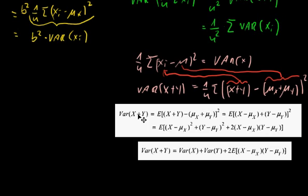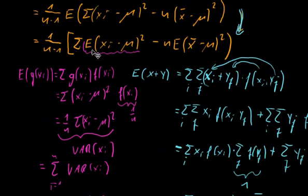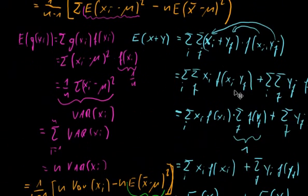The variance of X plus Y, as we said before, can be expressed via this expression. This always leads to the variance of Xi. We do the expected value and rearrange — putting the mu-x term with the x thing and the mu-y term with the y thing. Then we do the square, and the result is as you can see. We use what we proved: this blue thing — the expected value of a sum is the sum of the expected values.